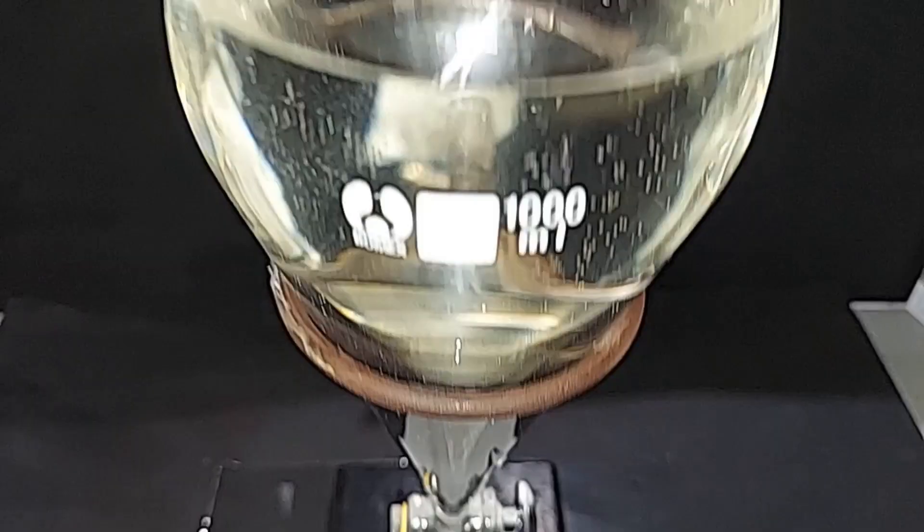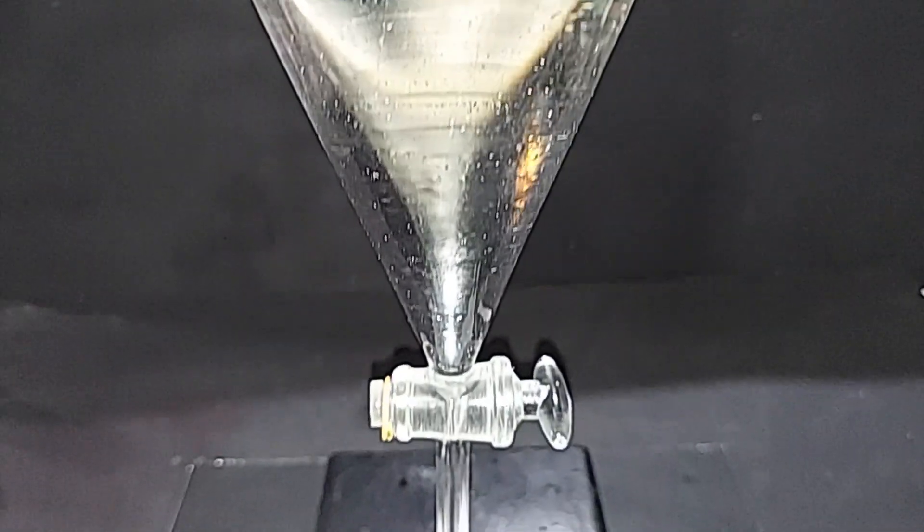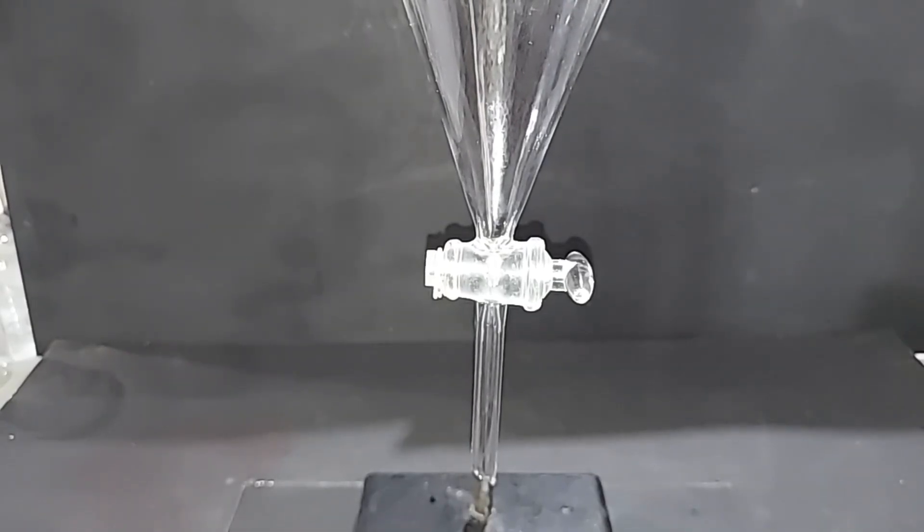Here's our crude chloroform. Of course, we're going to purify it next. I'm going to discard all of this and then clean the separatory funnel, and then we'll be back to wash the chloroform with the salt solution.